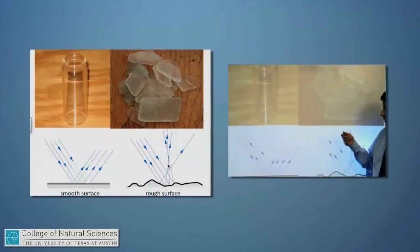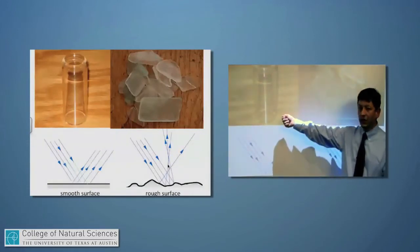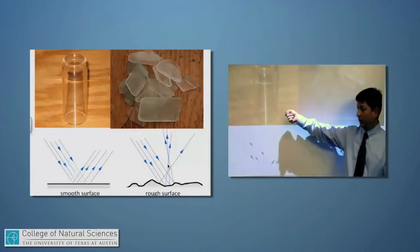And indeed, if I were to shine my flashlight on this piece of glass versus that piece of glass, it would look very different. This one would glare or reflect light back at me at a specific angle.